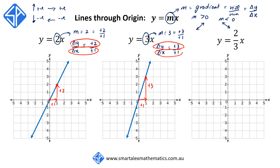Our third example is y is equal to two-thirds x. This line also goes through the origin. We're going to use the information that m is equal to two-thirds, which is the same as plus 2 over plus 3.